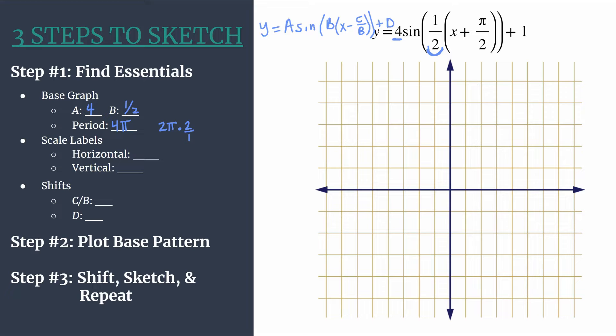So now we can select our scale labels. This is how we'll label both our axes. And with our method, this three steps to sketch method, we're very intentional about choosing how we label our horizontal axis. You should take your period and divide by 4. So 4π divided by 4. We'll count by units of π when we label our horizontal axis. And what this does is it ensures when we're plotting our base pattern in step two, it ensures that each of our key points aligns nicely with our horizontal labeled tick marks. This makes for a really nice, neat graph. And it also just makes it easier on us as we're graphing.